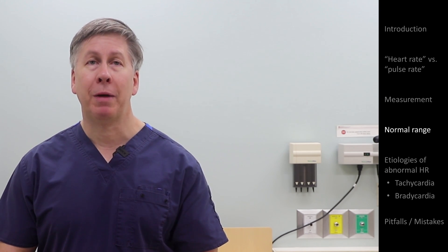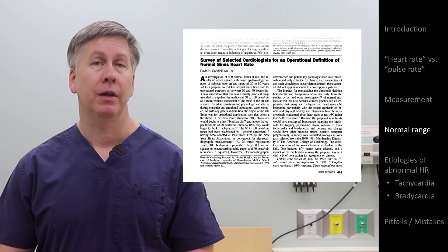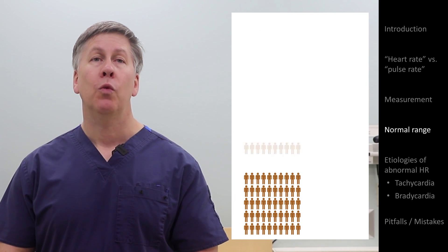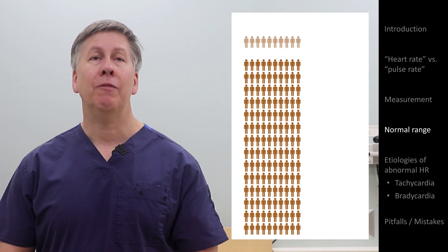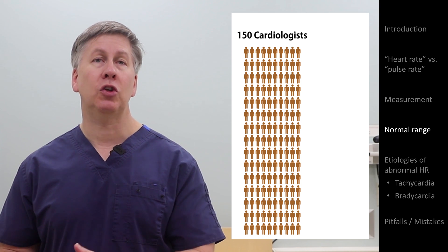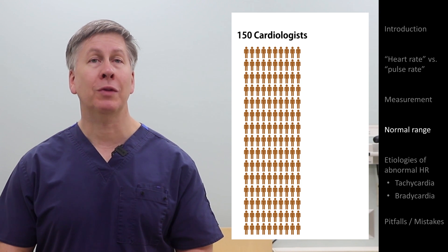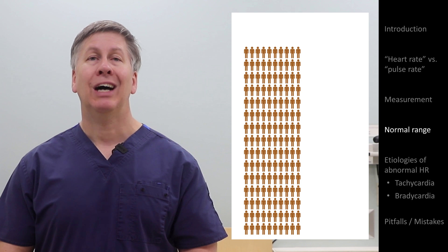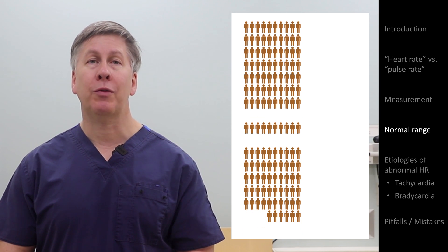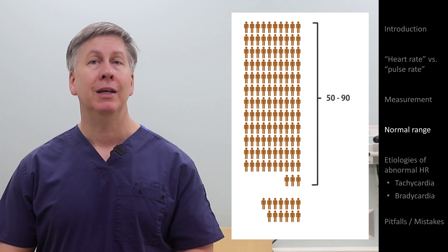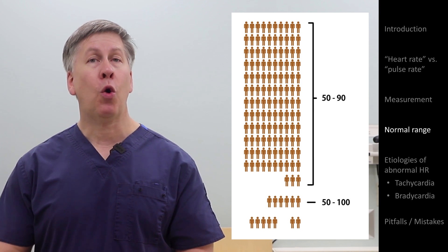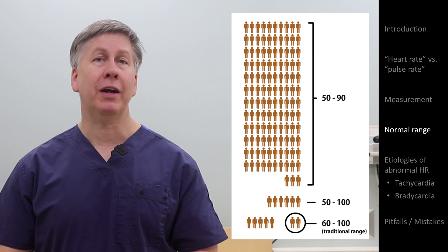In addition to large studies of patients, there's also expert opinion. In 1992, a survey was sent to 150 cardiologists which asked whether the limits of the so-called normal heart rate should be changed from 60 to 100, and if so what the new range should be. 136 cardiologists responded, of whom 123 agreed with a proposal of 50 to 90, 6 had a preference for 50 to 100, and only 2 preferred the original range.